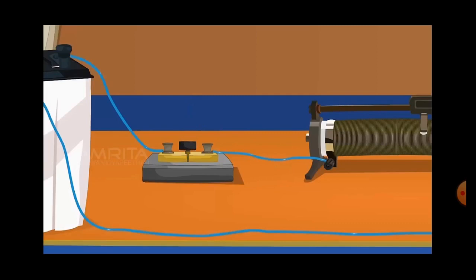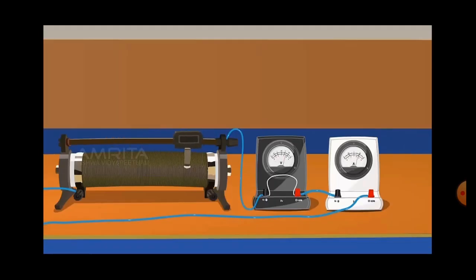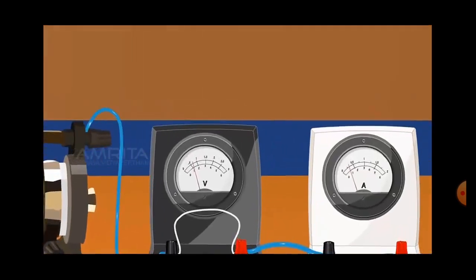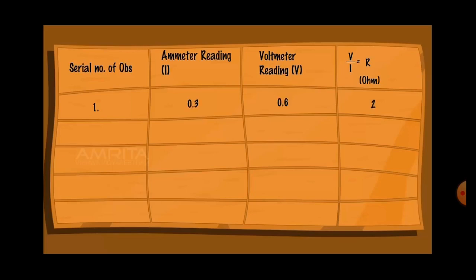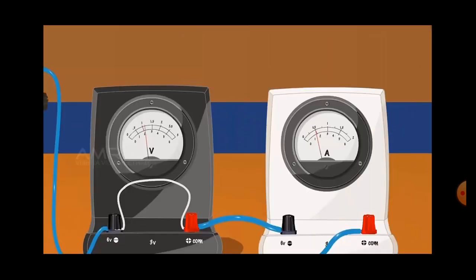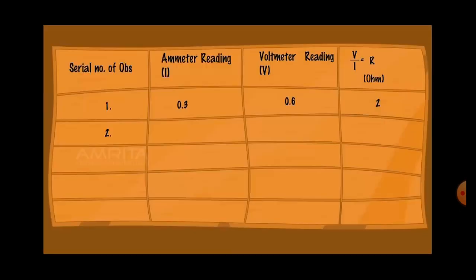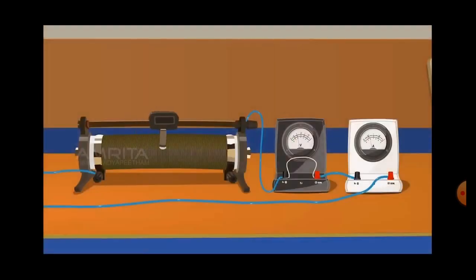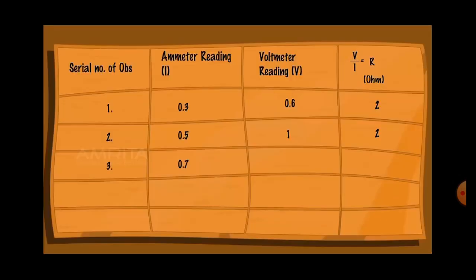Now we have to perform the experiment by sliding the rheostat. You can note down the voltmeter and ammeter readings — gradually the ammeter will give you certain values and the corresponding voltmeter values can be noted down. By sliding the rheostat, you can note down more readings. The results have been noted down and the resistance has been calculated. The fifth reading gives a resistance of 2 ohms.